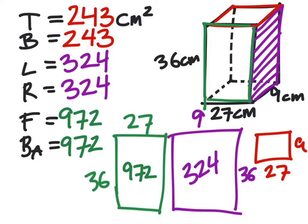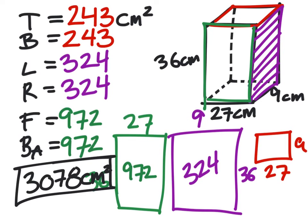So now what I need to do is go in and add all these together. I find that the surface area is 3,078 centimeters squared. That is my surface area. We already figured out the volume, but I'm going to show you guys the second way to do this.